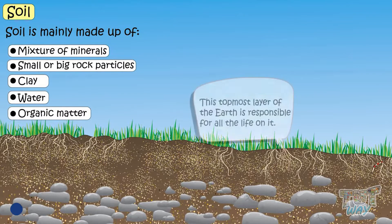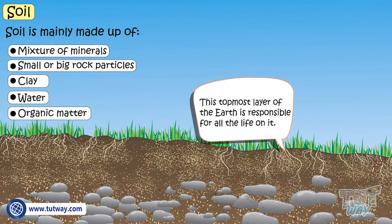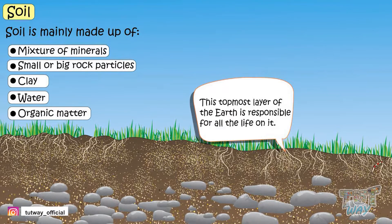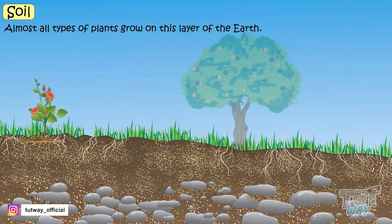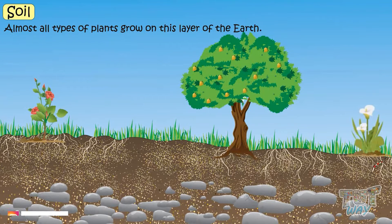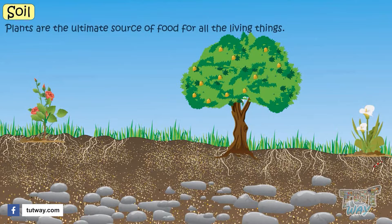This topmost layer of earth is responsible for all the life on earth, as almost all types of plants grow in this layer of the earth. And we know the ultimate source of food for all living things is plants.